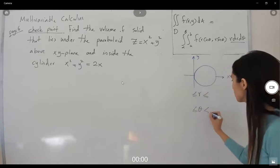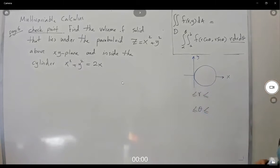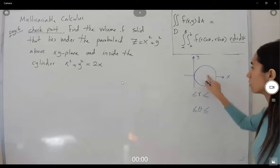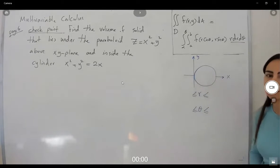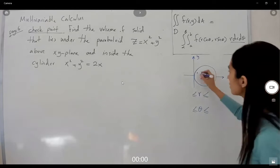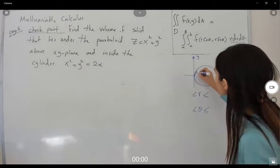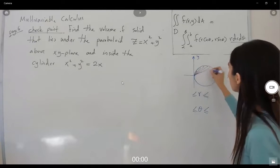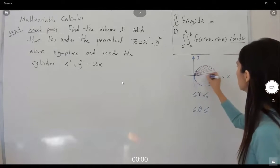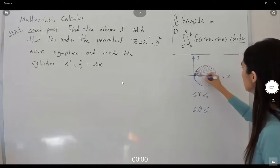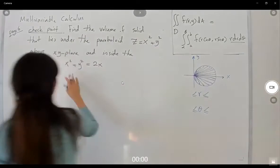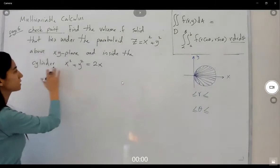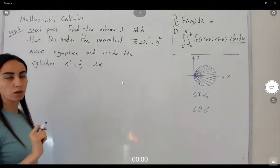What are these boundaries? Note that this circle is not centered at the origin and it doesn't have a fixed radius — the radius is changing from zero to the boundary. To find this boundary function, I'm going to rewrite the cylinder equation using polar form.